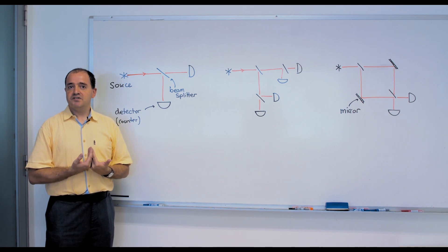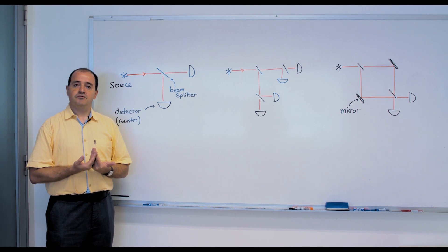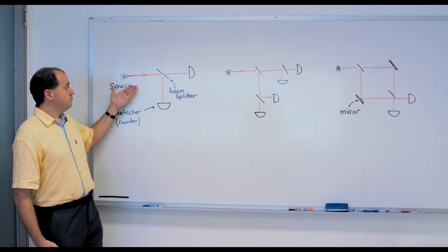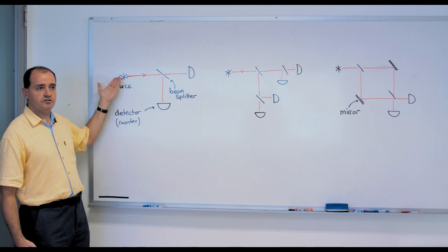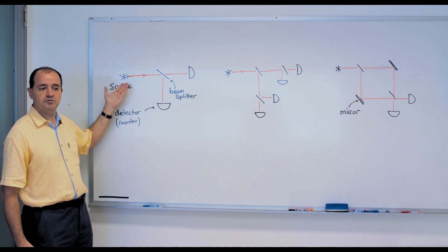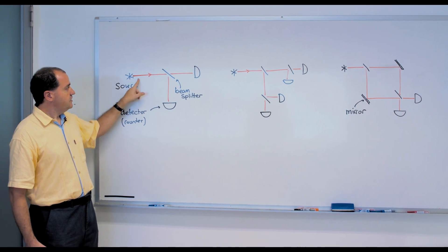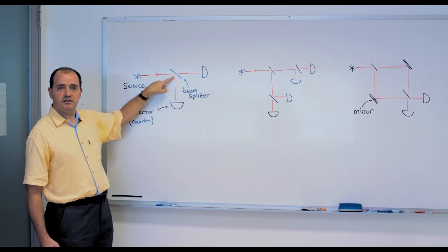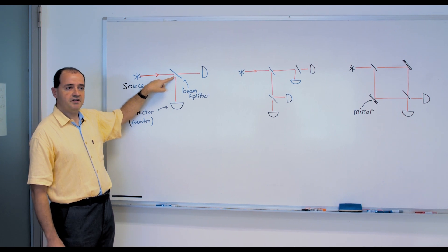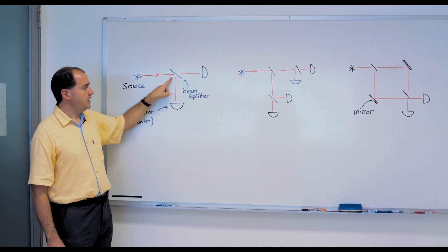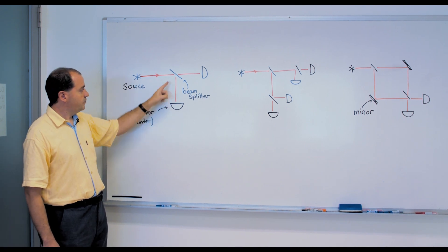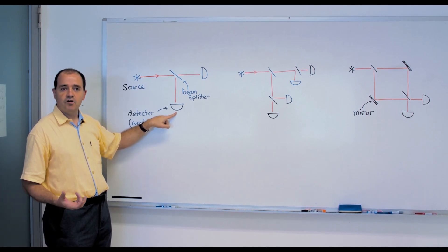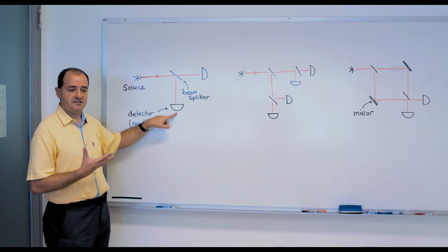Let me present one of these counterintuitive phenomena, distilled out of many years of experience and experiments. Let us start with this experimental setup. It describes a source of some particles — you can think of photons, neutrons, atoms, electrons, anything. These particles, one by one, are sent along a path onto a beam splitter, or a semi-transparent mirror — something that transmits some of the particles and reflects some of the particles. The particles arrive to a detector or counter that makes a click when a particle arrives.